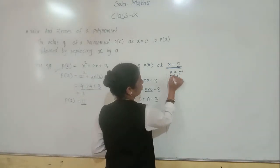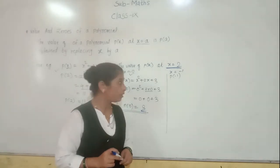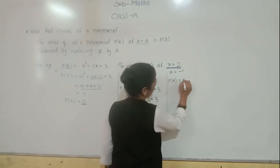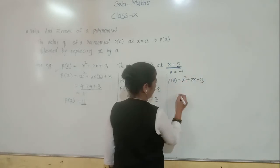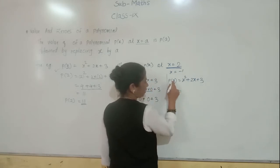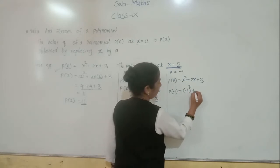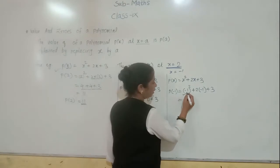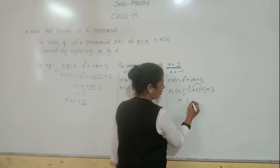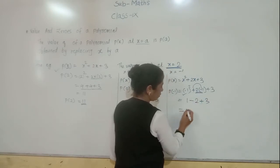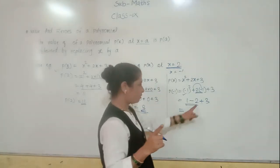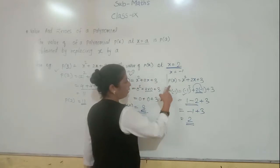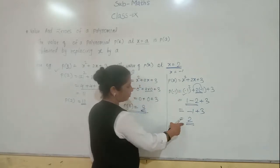Now we take X equals to minus 1. We have to find the value of the given polynomial at X equals to minus 1. So P of minus 1 equals to minus 1 squared plus 2 into minus 1 plus 3. Any negative number squared is always positive, so minus 1 squared is 1. Then plus minus gives minus 2, giving us 1 minus 2 plus 3. That is minus 1 plus 3, which equals 2. So the value of P of X at X equals to minus 1 is 2.